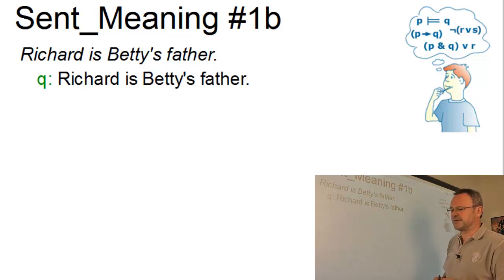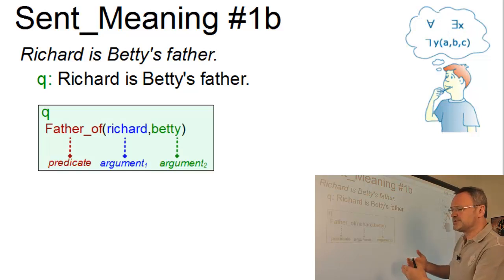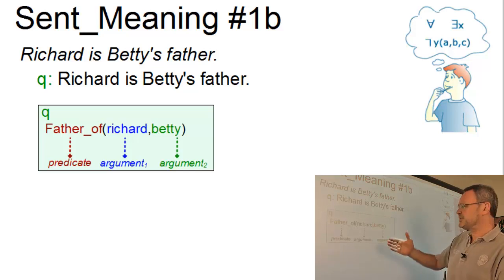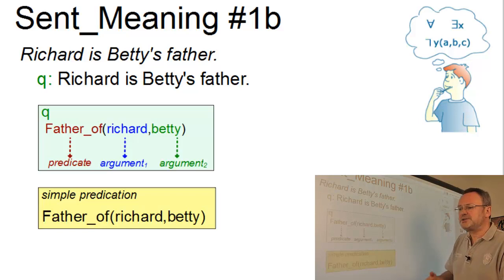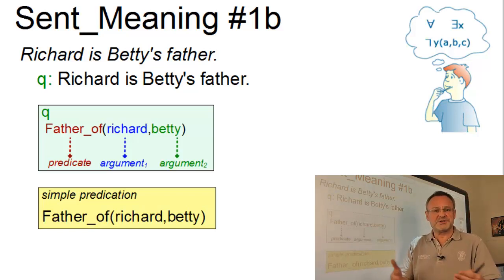Richard is Betty's father. In this proposition the predicate 'father of' denotes a relationship between the two arguments Richard and Betty. Thus we have a predication where a relationship between the arguments is established.